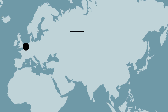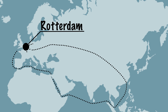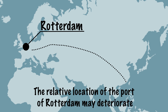A good example is the port of Rotterdam. Rotterdam is an important transit point because goods from Asia arrive here via the port and are transported to the east. It is becoming increasingly easier to transport goods from China to Europe by train. Because the goods are already coming from the east, they are no longer transported through the port of Rotterdam. The relative position of the port of Rotterdam may therefore deteriorate.